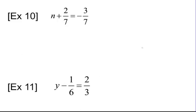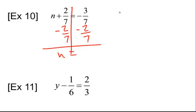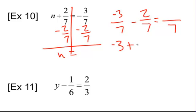Okay, welcome back. So here we have n plus 2 sevenths, so we're going to subtract 2 sevenths. Again, I'm going to do it off to the side. Negative 3 sevenths minus 2 sevenths. I know my denominator's 7, but what about the numerators? Well, we have negative 3, keep, change, opposite. Negative 3 plus negative 2 is negative 5. So we have negative 5 sevenths.